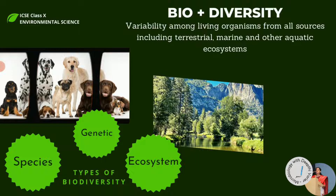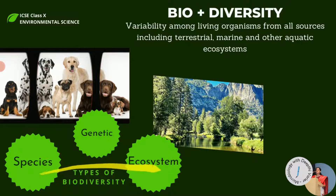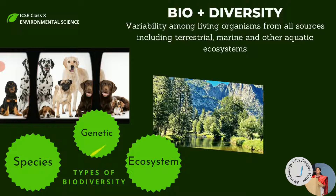There are three levels of biodiversity: genetic, species, and ecosystem. Genetic biodiversity is the variation that exists within a particular species. For example, in dogs there is variety and variation within the same species, and that is what we call genetic diversity.